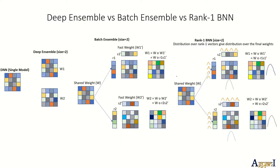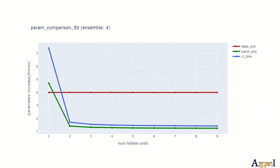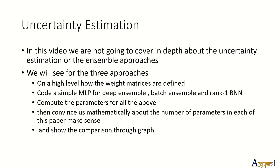We'll see how the weight matrices are defined for each of these papers, and then we'll draw a comparison in terms of parameter count — how it varies when you increase the number of parameters and how parameter efficiency differs across papers. This video is not going to cover in-depth uncertainty estimation or detailed ensemble approaches; we are just going to draw some comparison in terms of parameter count.